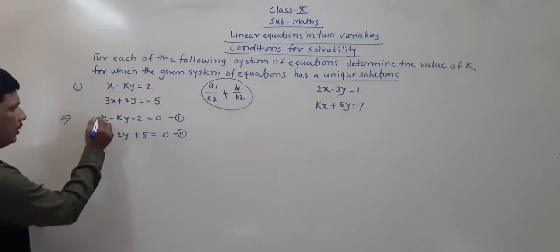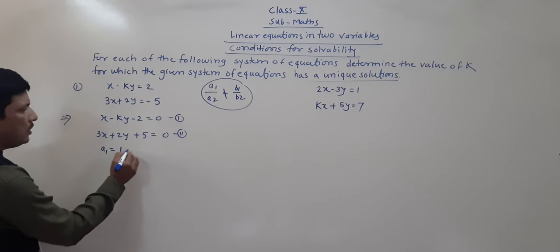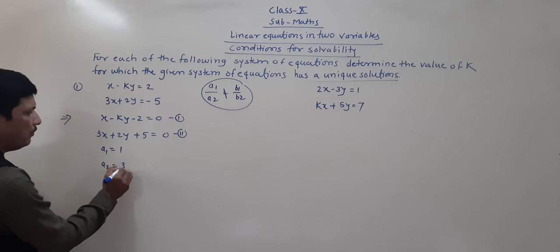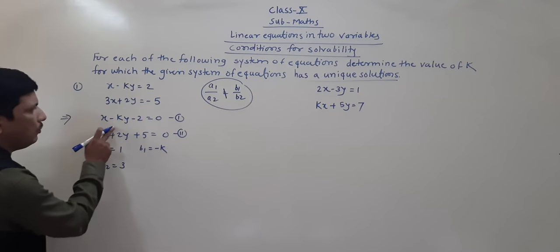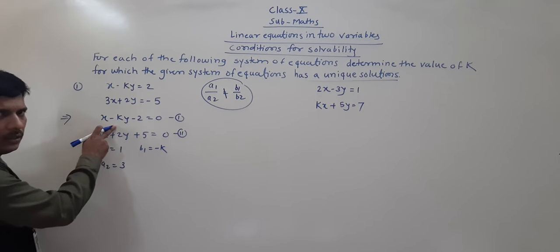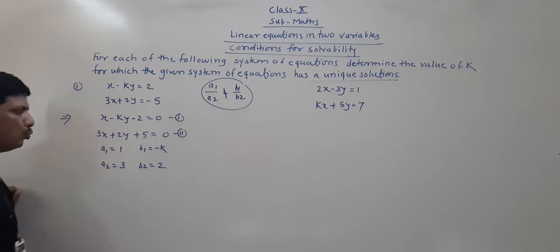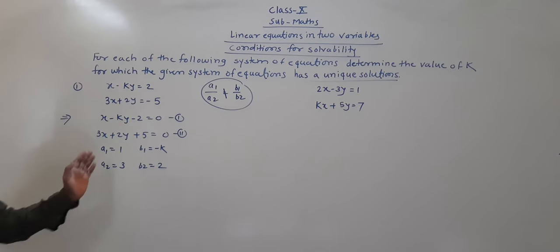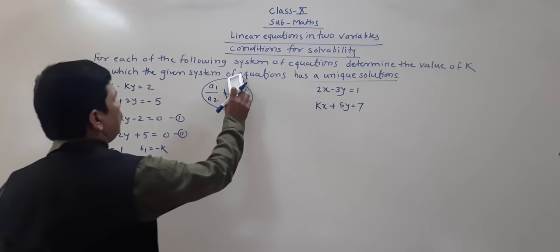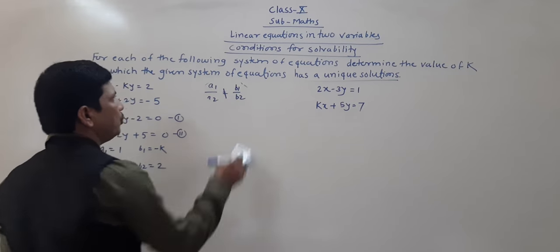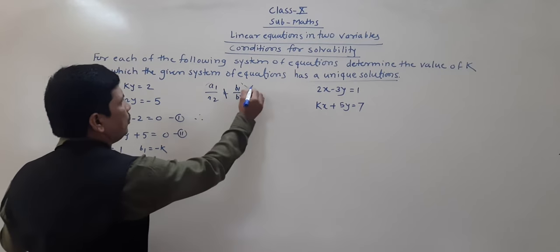So the coefficients are: a1 is equal to 1, a2 is equal to 3. What is b1? b1 is equal to minus k, since the coefficient of y is minus k. And b2 is equal to 2. According to the unique solution condition, a1 by a2 is not equal to b1 by b2.